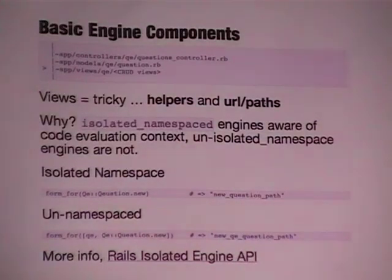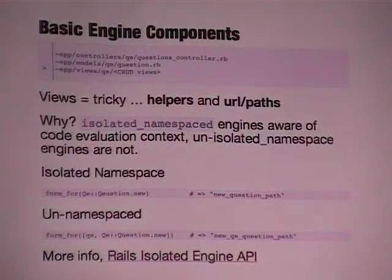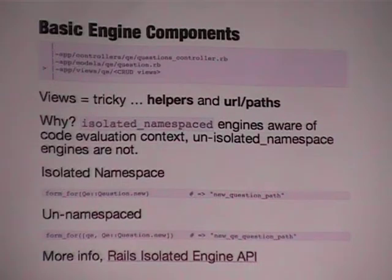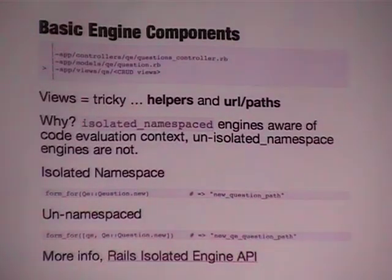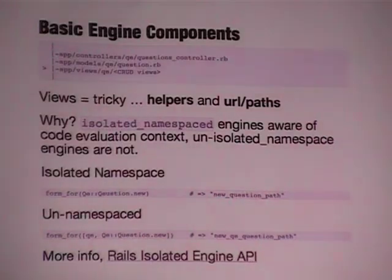Again, when referring to routes in views, the isolated and unisolated namespace distinction comes into effect. For an isolated namespace, you don't have to specify the QE namespace — but in an unisolated namespace, you do. There's a link to the isolated engine part of the docs that was really helpful. It probably takes an hour or two to make sense of it.